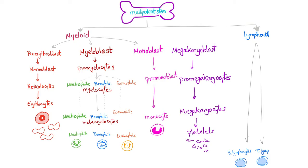As you know, the multipotent stem cells in the bone marrow have myeloid and lymphoid stem cells. Myeloid will give us the red blood cell through many steps from blast to site.